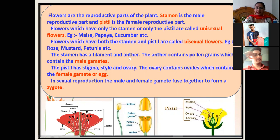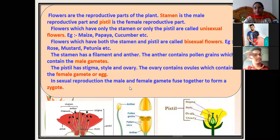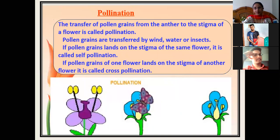The stamen has a filament and an anther. The anther contains pollen grains, which contain the male gametes. The parts of the pistil are style, stigma, and ovary. The ovary contains the ovules, which are inside the ovary and contain the female gametes or egg cells. In sexual reproduction, the male and female gametes are fused together to form a zygote, which ultimately develops into a completely new plant.